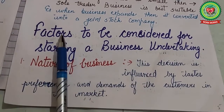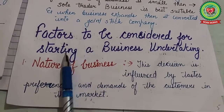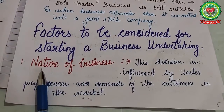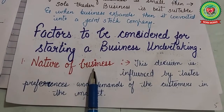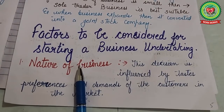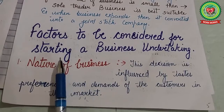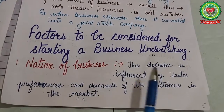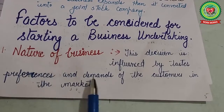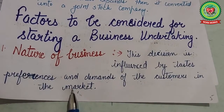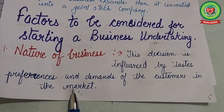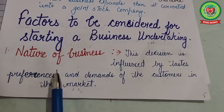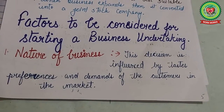Our next topic is factors to be considered for starting a business undertaking. The first factor is nature of business — the businessman must decide the nature and type of business to be undertaken, influenced by the tastes, preferences, and demands of customers. He should also have technical knowledge and genuine interest in the field he wants to enter.